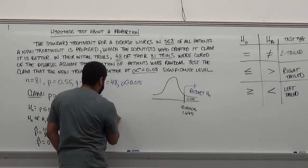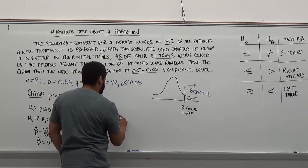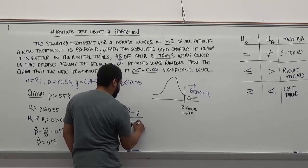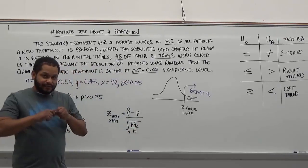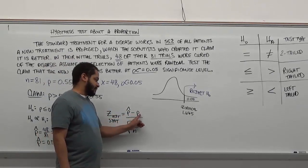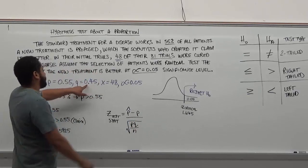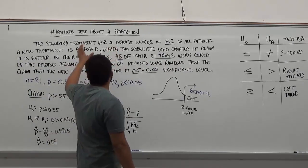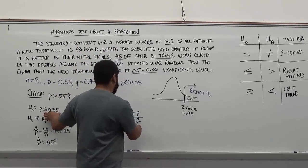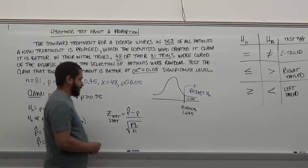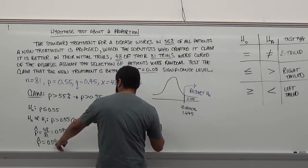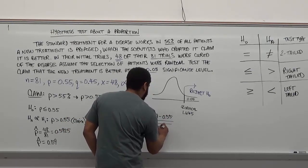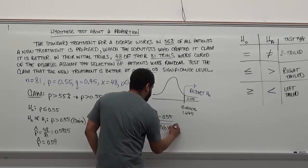Now we can run the z-test statistic. The formula is p-hat minus p, divided by the square root of p times q over n. Be careful not to confuse p-hat with p — the p and q in the formula come from the original claim in the question. Plugging in: (0.59 − 0.55) divided by the square root of (0.55 times 0.45 divided by 81).